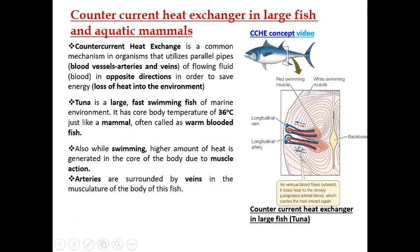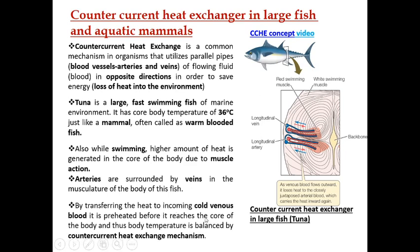By transferring the heat to the incoming cold venous blood, it is pre-heated before it reaches the core of the body, and thus body temperature is balanced by the counter current heat exchange mechanism. Either the cold blood or the hot blood — the balance ultimately occurs between veins and arteries. Let us see a small video explaining this concept.